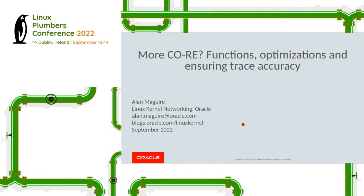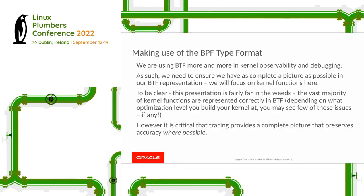I'm going to be talking about tracing, ensuring trace accuracy where we can, and assessing how complete our picture of the kernel is via BTF. It's got to the point now where we're using BTF more and more in kernel observability and debugging, so it's a good time to assess how complete that picture of the landscape is.